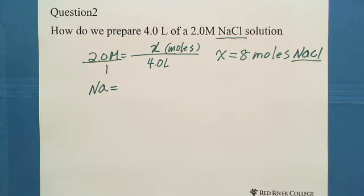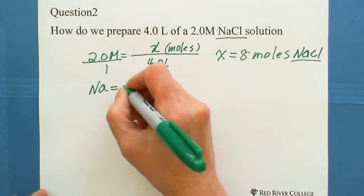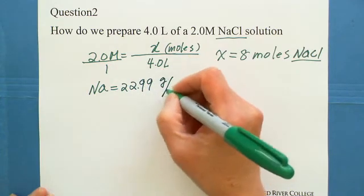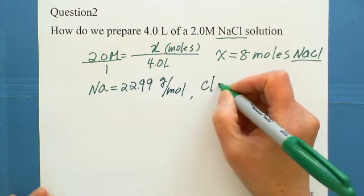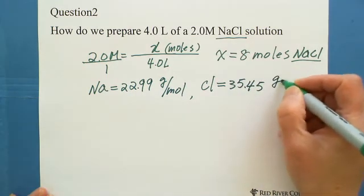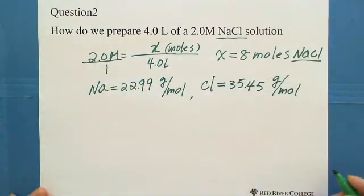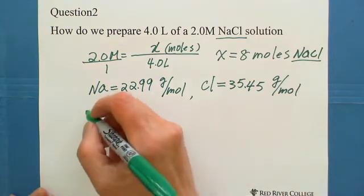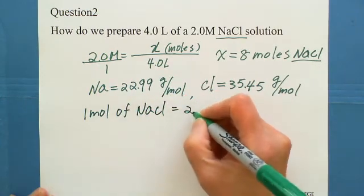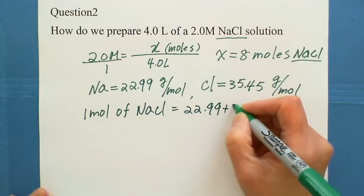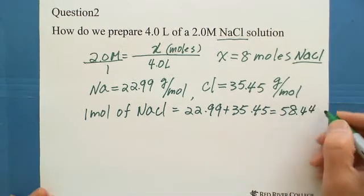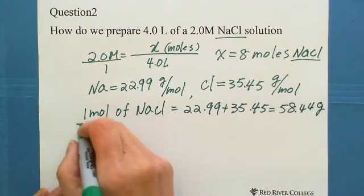And the chlorine, 1 mole equals 35.45 grams per mole. These two numbers are molar mass checked from the periodic table. And then, 1 mole of sodium chloride equals 22.99 plus 35.45, which equals 58.44 grams. So 1 mole and this much grams.